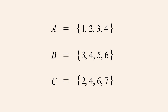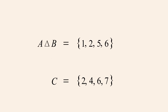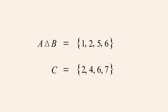Notice that sets A and B have the elements 3 and 4 in common. Therefore, 3 and 4 are the intersection of sets A and B. Since the symmetric difference of two sets includes all the elements of both sets excluding their intersection, the symmetric difference of A and B consists of all the elements of A and B except for 3 and 4. So the symmetric difference of A and B consists of 1, 2, 5, and 6.